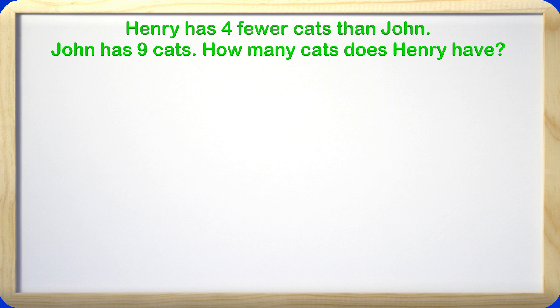Here is another problem. Henry has 4 fewer cats than John. John has 9 cats. How many cats does Henry have? In the problem we don't know how many cats Henry has, and we need to find that out. We know that John has 9 cats, and Henry has 4 fewer cats than John. The word fewer means a smaller number — having the word fewer in the problem helps us know we will need to subtract to get our answer.